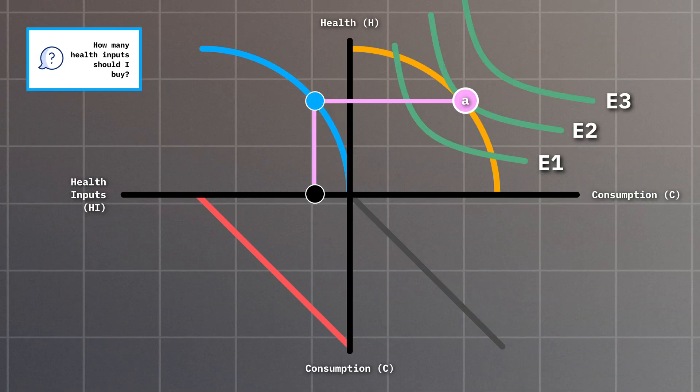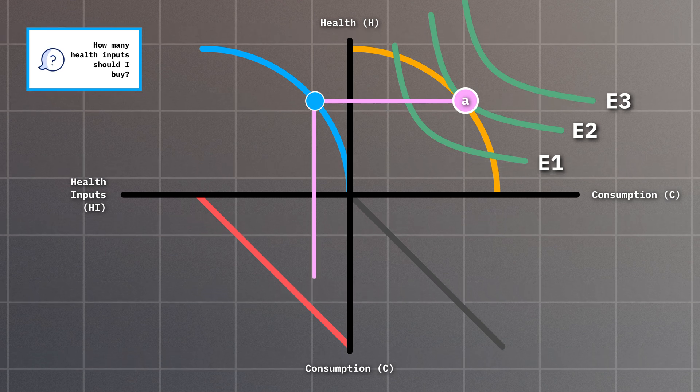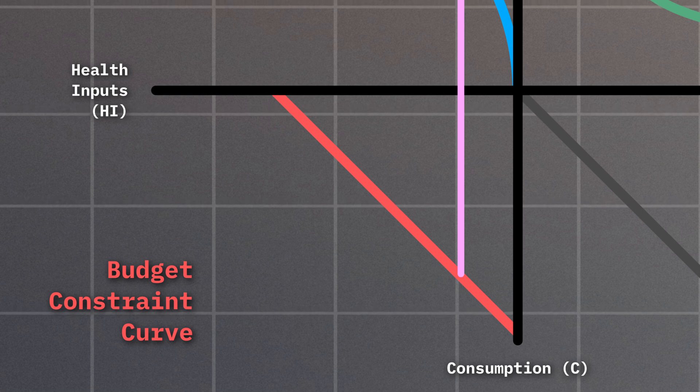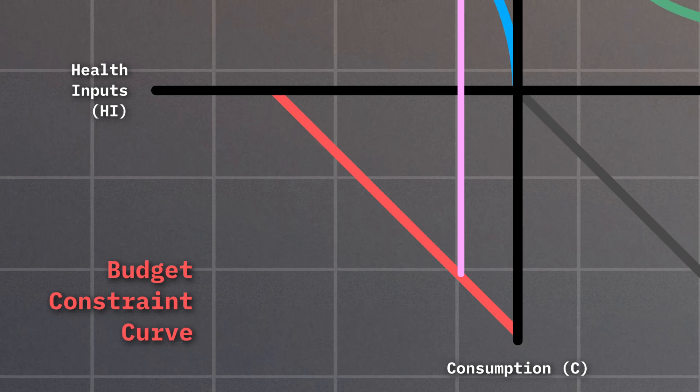Since we know how many health inputs we need to buy, we can follow a vertical line down until we hit the budget constraint line. The budget constraint line acts as a consumption boundary, visualizing how we value buying health inputs in favor of spending money on consumption.